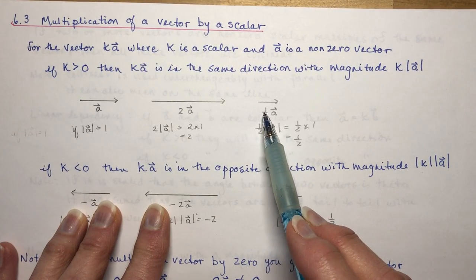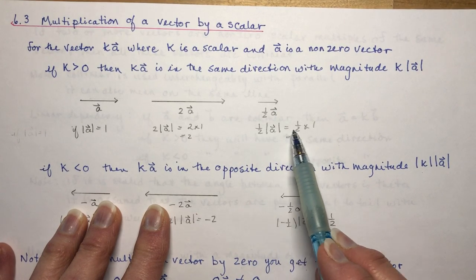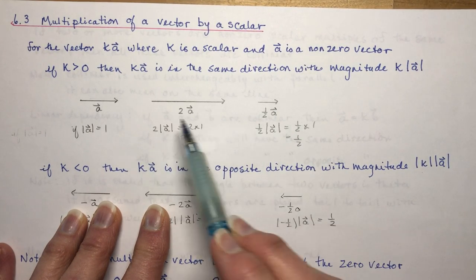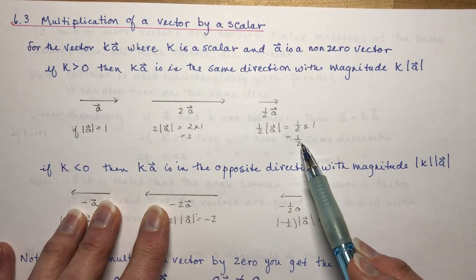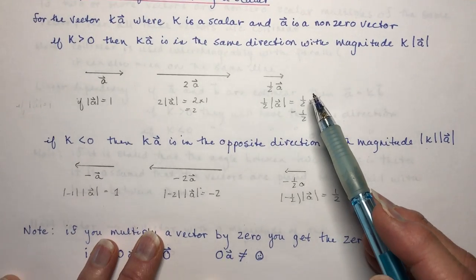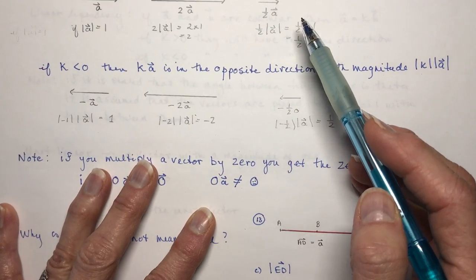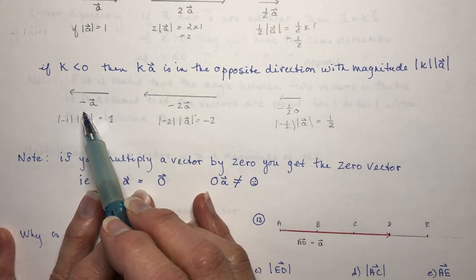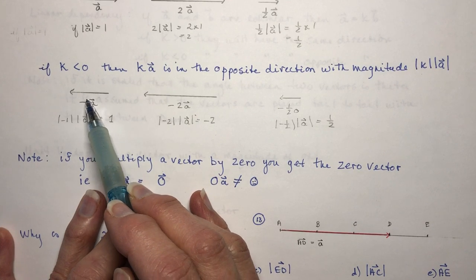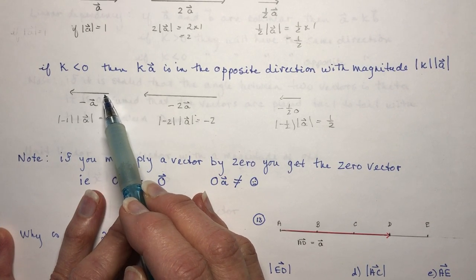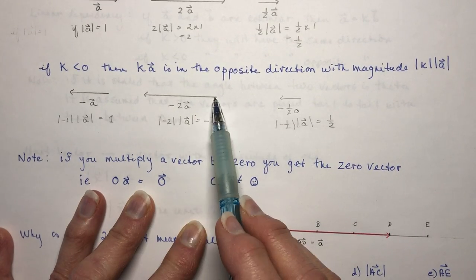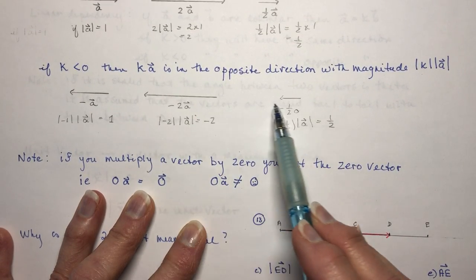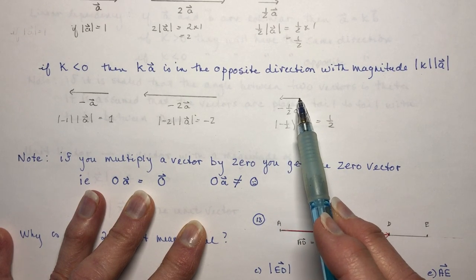If I reduced it by a half — so now I have one-half vector A — then one-half times vector A is one-half times 1, because this was 1 unit, and its magnitude is one-half. Now if K is less than 0, the vector goes in the opposite direction. If I said negative vector A, multiplying by negative 1, I now have my vector going the other way. Negative 2 times that is twice as long going in the opposite direction.